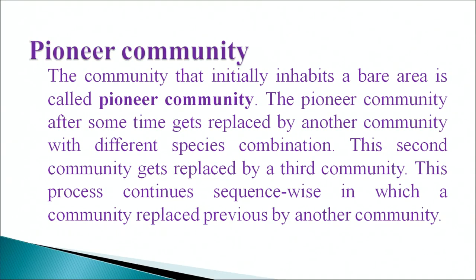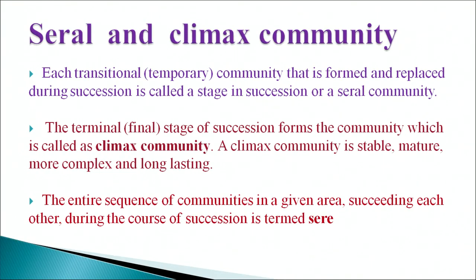The community that initially inhabits a bare area is called the pioneer community. After some time, the pioneer community gets replaced by another community with different species combinations. This second community gets replaced by a third, and so on in sequence — a process where one community replaces the previously existing one. Each transitional (temporary) community formed and replaced during succession is called a seral stage or seral community.